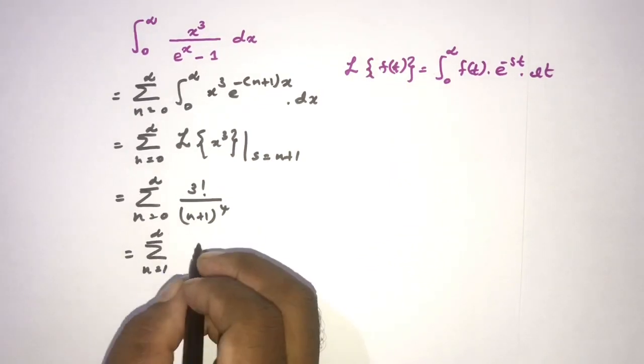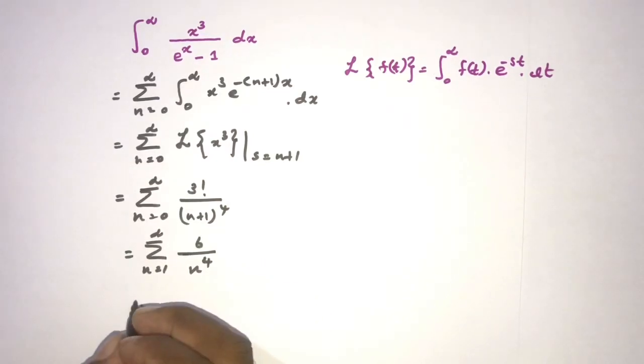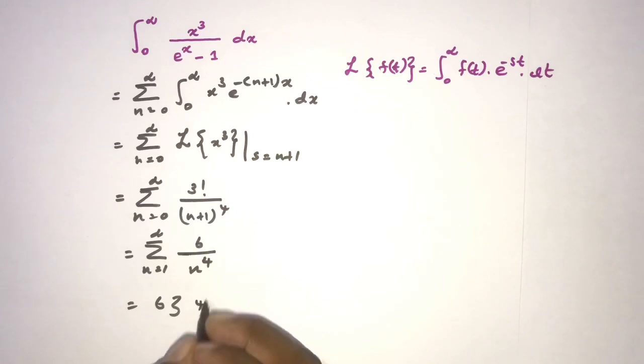1 to infinity. 3 factorial we know is 6, here n raised to the fourth power. Now 6 times 1 to infinity 1 over n raised to the fourth power, we know is zeta of 4. Okay, this is the answer.